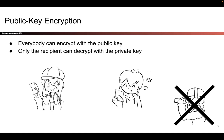The way these schemes work is anybody can encrypt a message, but only the recipient can decrypt it with their private key. For example, any of you can use my public key to encrypt a message you want to send to me. However, the only person who can decrypt those messages is me, the recipient, because you need to use the private key to decrypt the message. When messages are encrypted, hopefully an eavesdropper like Eve is not able to figure out what the messages say.